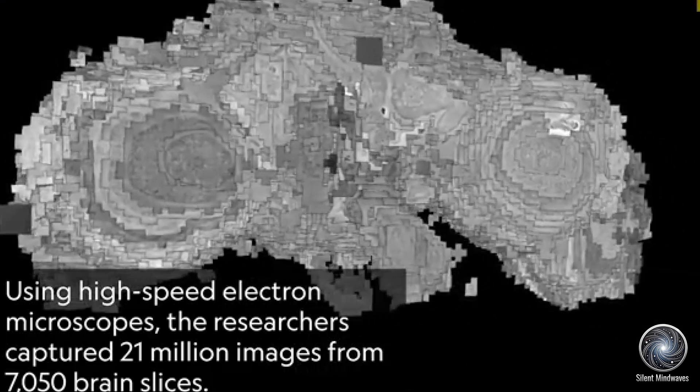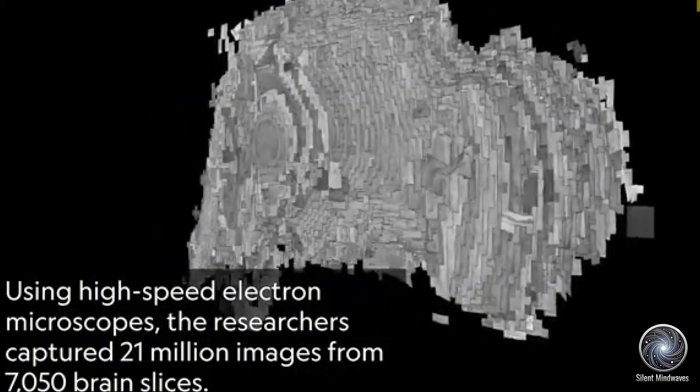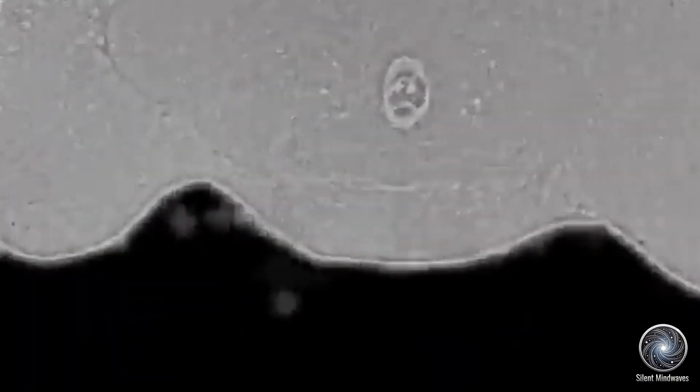To put this into perspective, the human brain has around 86 billion neurons and approximately 100 trillion synapses, making the fruit fly's brain a much simpler, yet still complex, model to study.